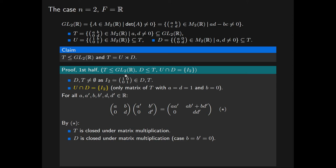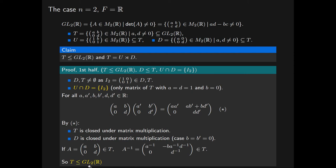To conclude that T is a subgroup of GL2R and D is a subgroup of T, it remains to show that for an arbitrary matrix of T its inverse belongs to T, and likewise for D. For an arbitrary element A of T, A inverse is given by the following matrix, where because A and D are non-zero their inverses exist and are also non-zero. So this matrix belongs to T, establishing that T is a subgroup of GL2R. It also follows that D is a subgroup of T, since setting B equal to 0 gives an element of D whose inverse also has a zero entry and therefore belongs to D.